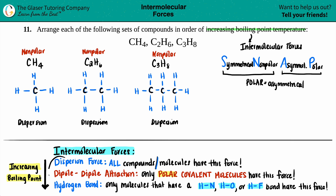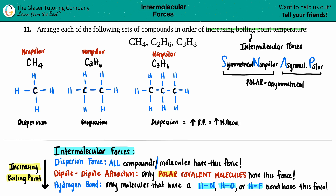If you collect more intermolecular forces, your boiling point increases. But how do we rank boiling point if all three only have dispersion forces? When all molecules share the same intermolecular forces, the higher the boiling point comes from the higher molecular mass. There is an exception involving long-chain versus kinked-chain organic molecules, but here we go with the general rule: higher molecular mass means higher boiling point.